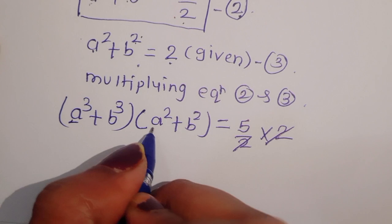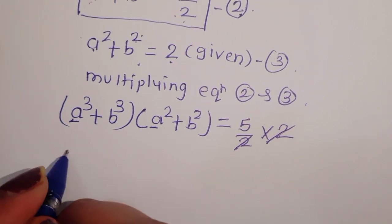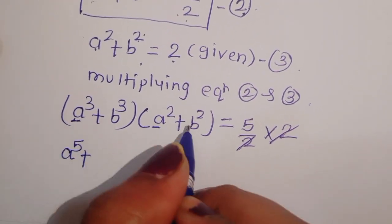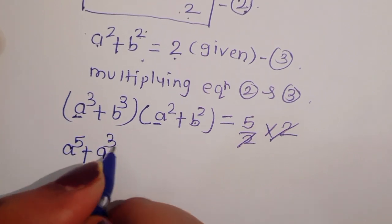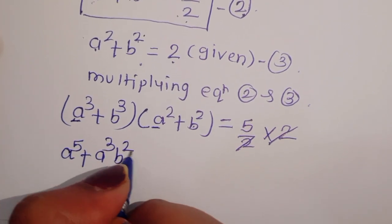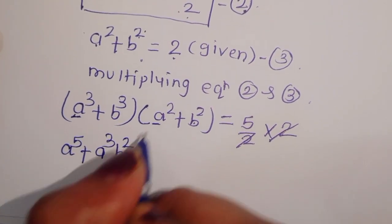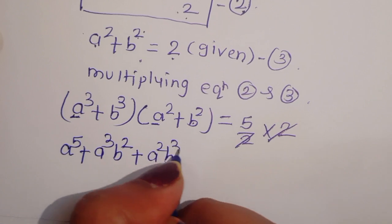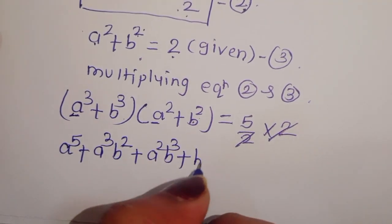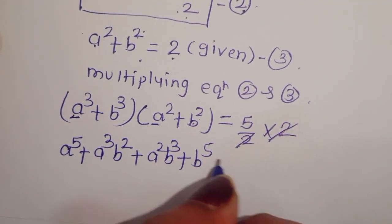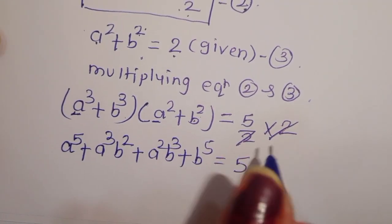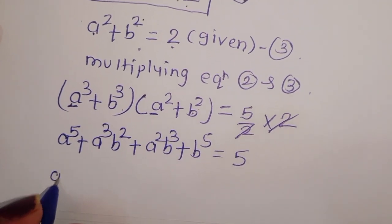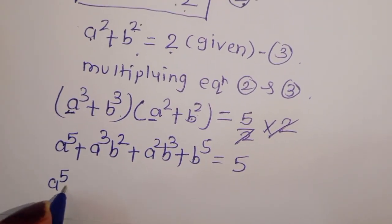Expanding this product we get: a power 5 plus a cube b square plus a square b cube plus b power 5.